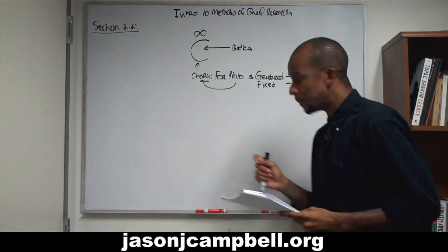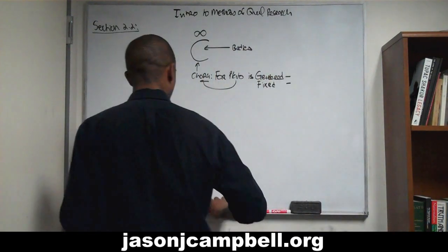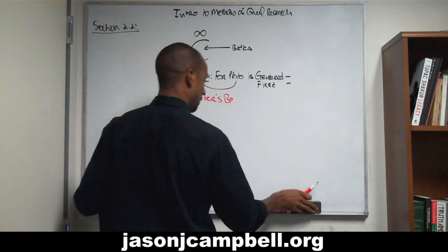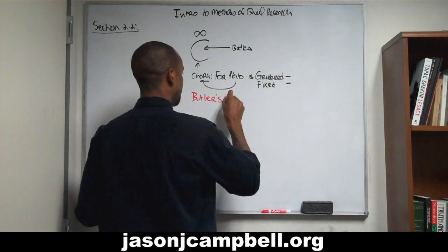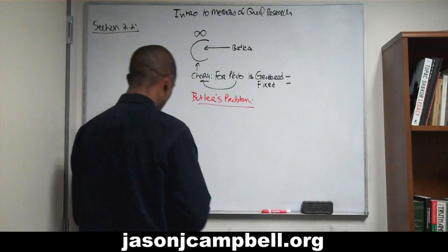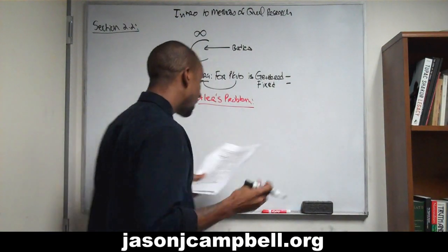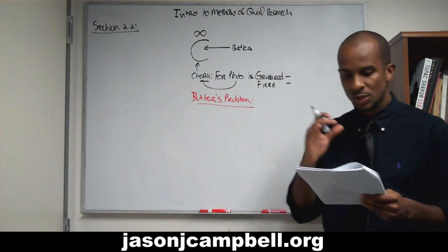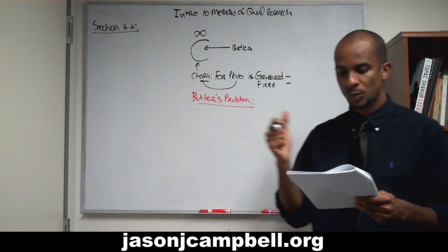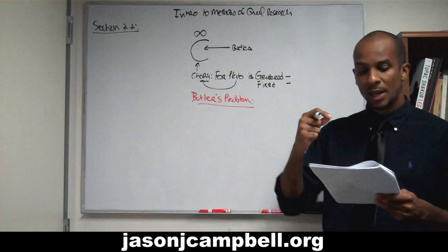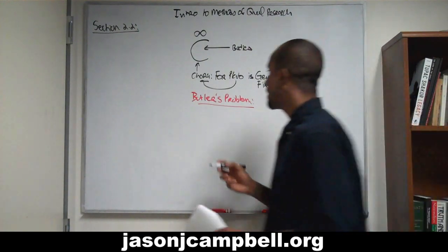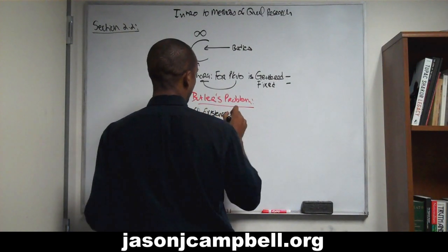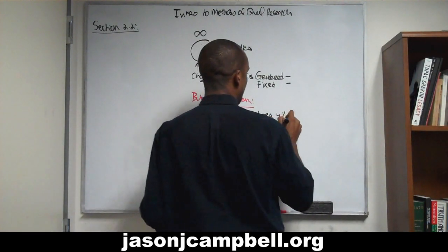Butler's first problem with Plato: the existence of the chora without form. The chora that is prohibited from resembling any form — it exists without form. I'm going to create a list of all of Butler's problems, because it's very hard to track, and then we will see why these theoretical presuppositions about feminine identity inform existing patriarchal norms.